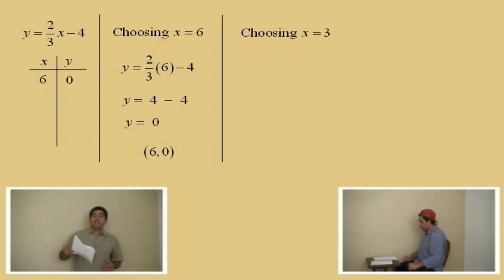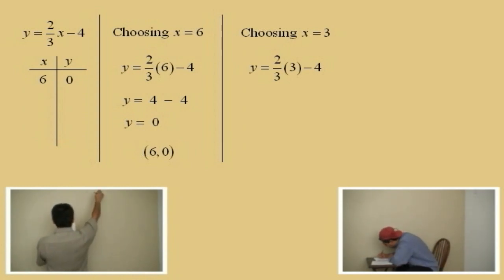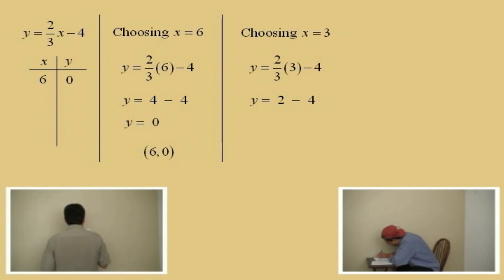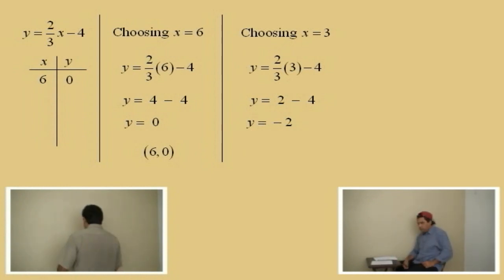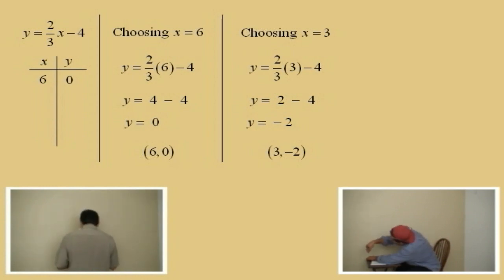What's another good choice for x? 3. Okay, 3 is a good choice because 3 will eliminate that fraction. So y equals 2 thirds times 3, subtract 4. What's 2 thirds times 3? 2. That's right, because the 3s cancel out. We have y equals 2 subtract 4. And what does 2 subtract 4 give us? Negative 2. Very good. So choosing x equals 3 gives us y equals negative 2. Our ordered pair is 3 comma negative 2. Very good.